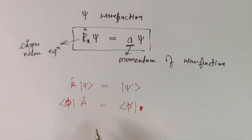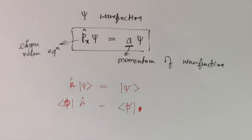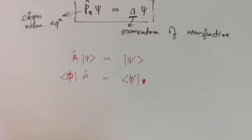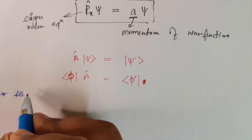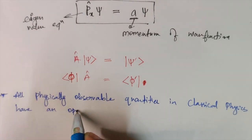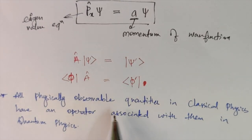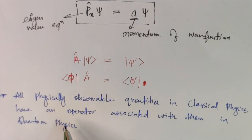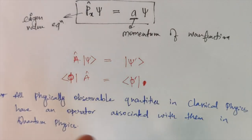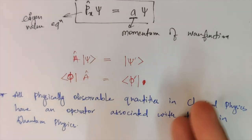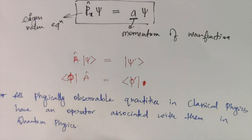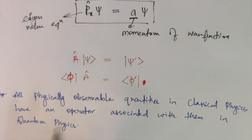In quantum mechanics, there is a theorem that all physically observable quantities — like position, momentum, kinetic energy, potential energy, and angular momentum — have an operator associated with them in quantum physics or quantum chemistry. We'll now talk about what these operators are, their values in quantum mechanics, and some properties such as the Hermitian operator and the linear operator.